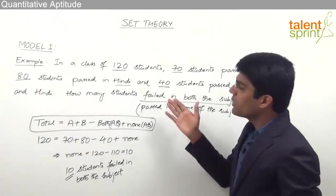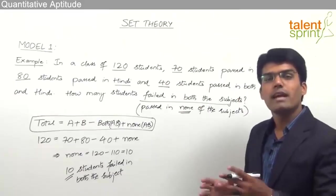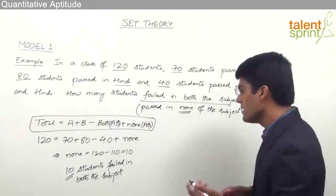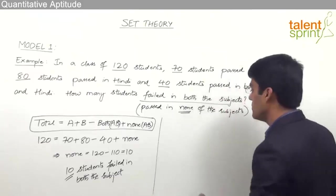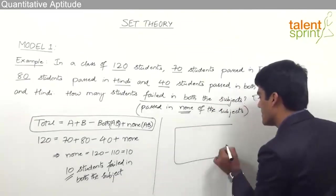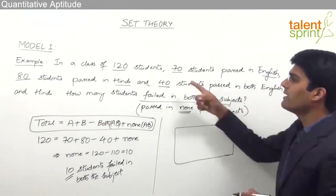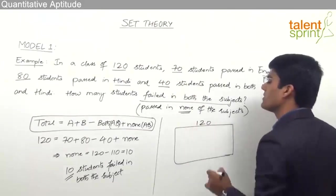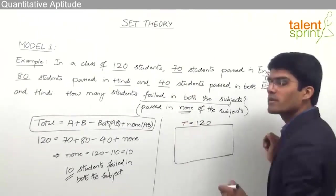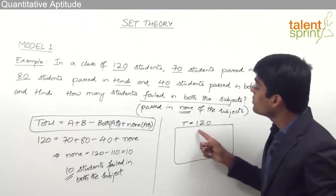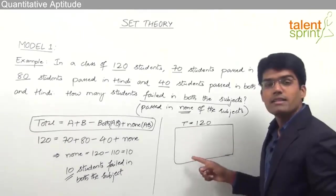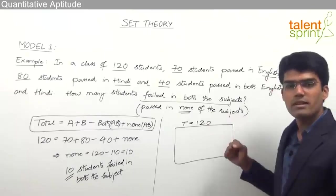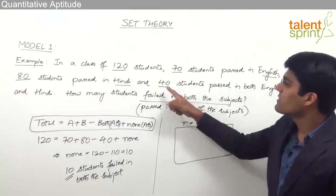The alternate solution for this question can be done with the help of Venn diagrams. We know there is a universal set; here the universal set is the total number of students, that is 120. We have two different subsets: one is students passed in English and the other is students passed in Hindi.